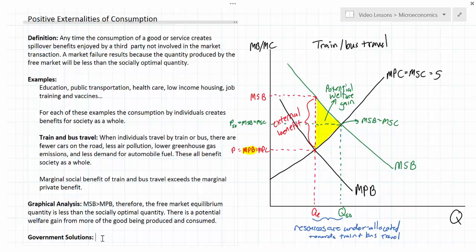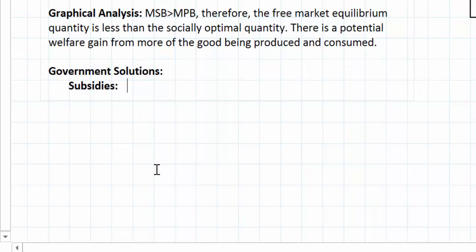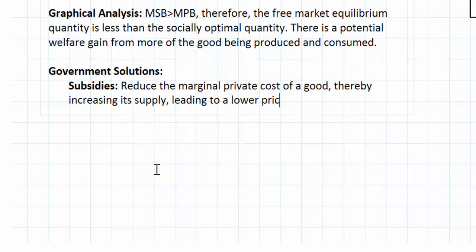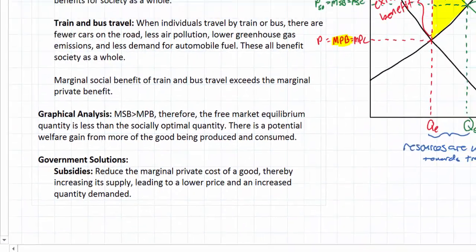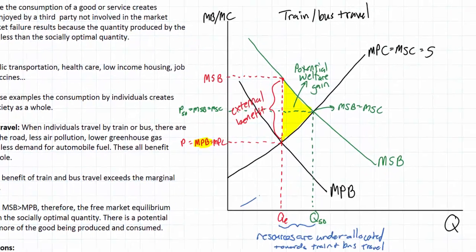What can government do to increase the number of people who take trains and buses and reduce the number driving cars — which creates negative externalities that society must bear? Government solutions to positive externalities of consumption take several forms. The most obvious solution is subsidies, which reduce the marginal private cost of a good, thereby increasing its supply, leading to a lower price and an increased quantity demanded.